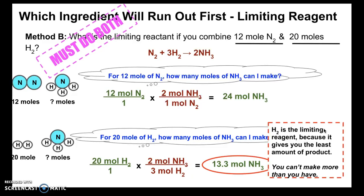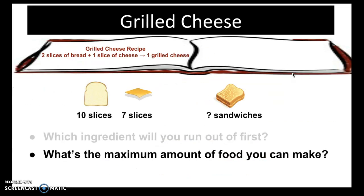With Method B, unlike Method A, you must do both calculations because you need to compare the amounts of product each reactant can produce and pick the one that gives the least. So the key thing with Method B: you must do both. Now that we've covered the limiting reagent, we're going to move on to the next concept — what's the maximum amount of food or product you can make — which is your theoretical yield.